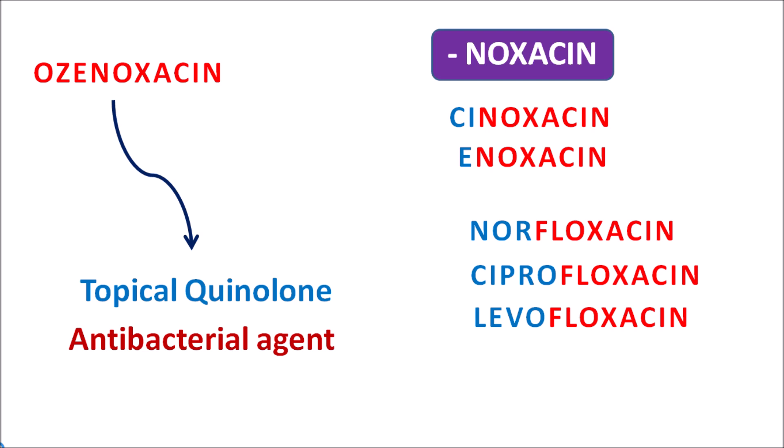But still all these drugs act in a similar way — they can inhibit DNA replication, thereby inhibiting the growth of bacteria. Ozenoxacin can be topically used to treat bacterial infections, which is why it is indicated in the treatment of impetigo. Today in this video we are going to discuss how this drug acts, what are the important precautions, side effects, and doses.